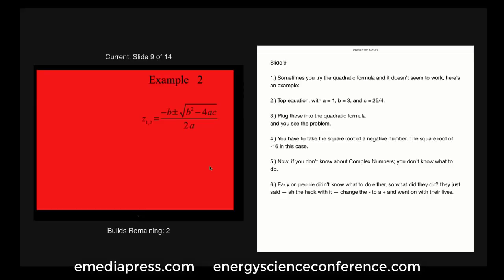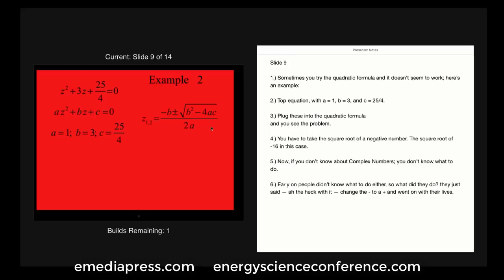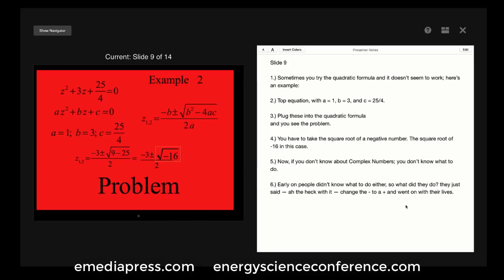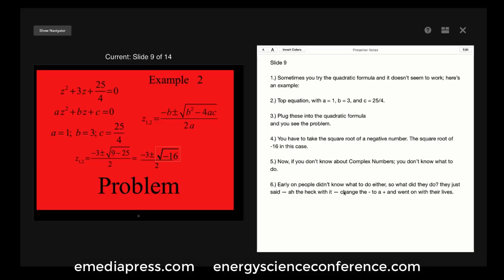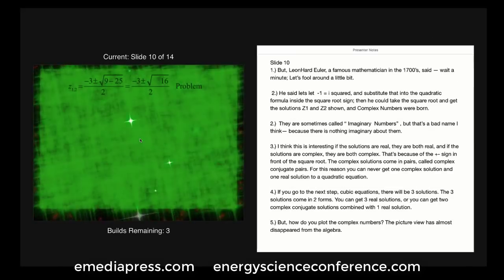Sometimes you try to solve the quadratic equation using the quadratic formula and it doesn't seem to work. Here's an example: with a equals 1, b equals 3, and c equals 25 over 4, if we plug these into the quadratic formula we see immediately what the problem is — you can't take the square root of a minus number. In this case, the square root of minus 16. If you don't know anything about complex numbers, you don't know what to do. Early on, people didn't know what to do either, so they just changed the minus sign to a plus sign and went on with their lives.